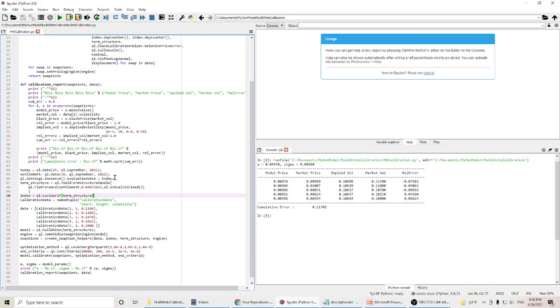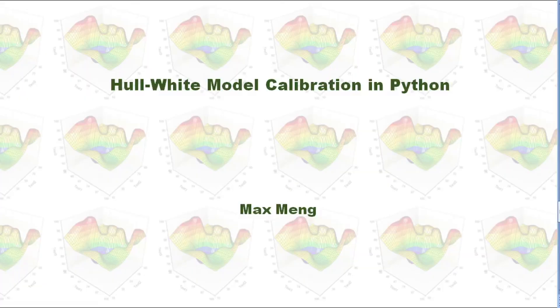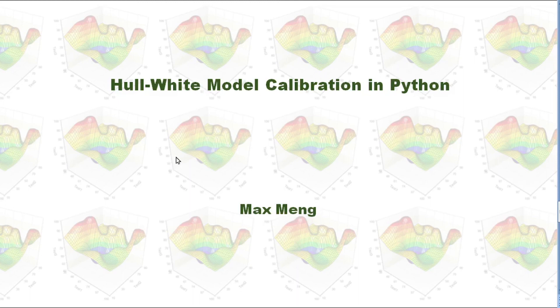I put this code in the GitHub, so you can go there, get the source code, and run it by yourself. This is how I calibrate Hull-White model in Python. Please provide your comments and subscribe to my channel. Thank you very much for watching.